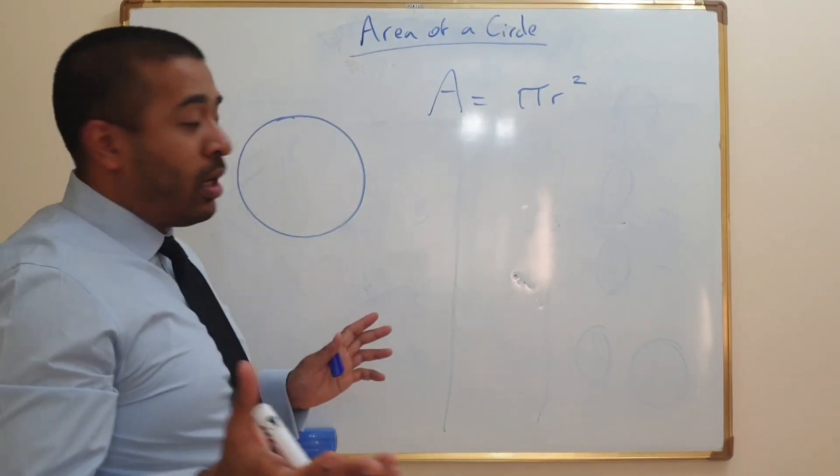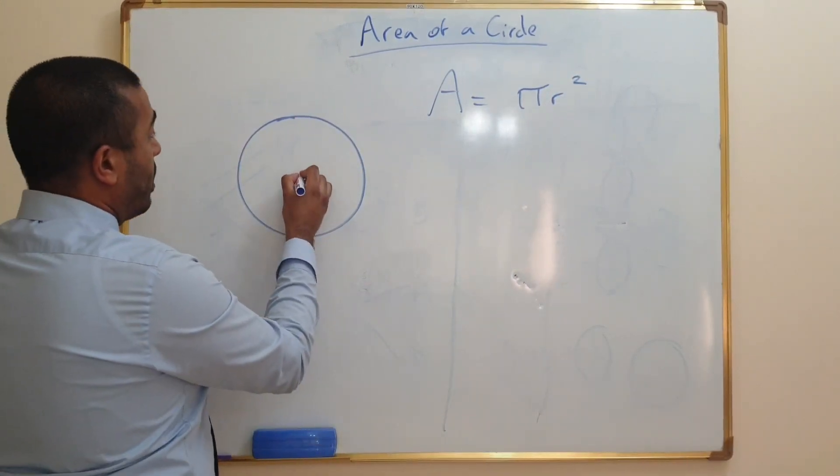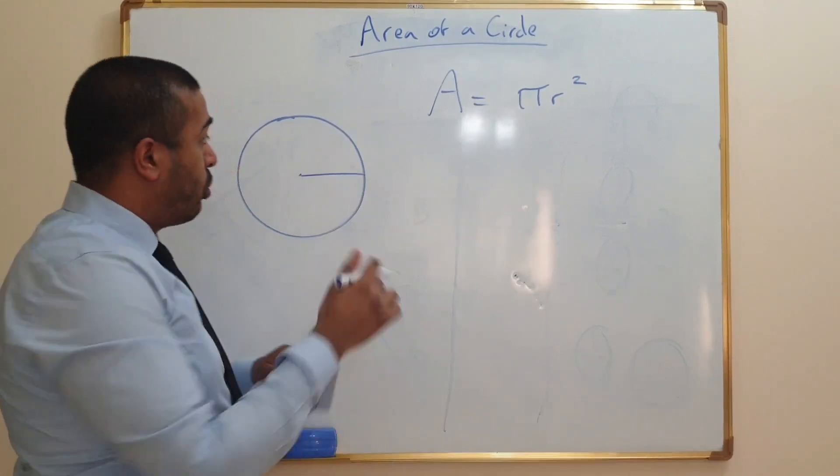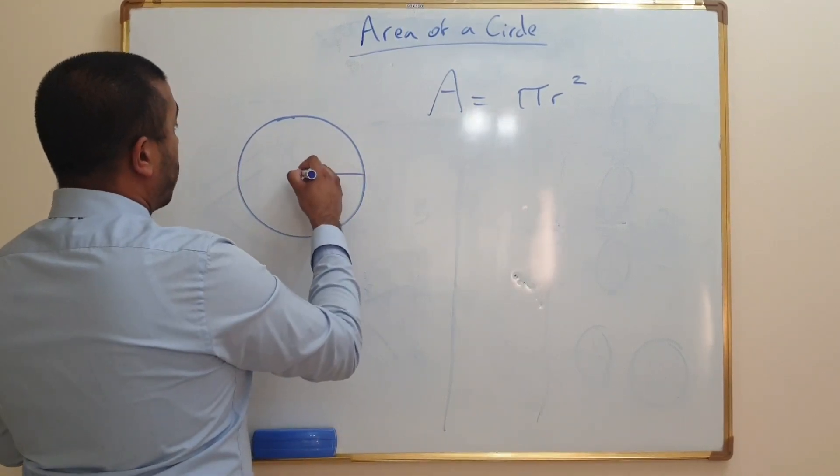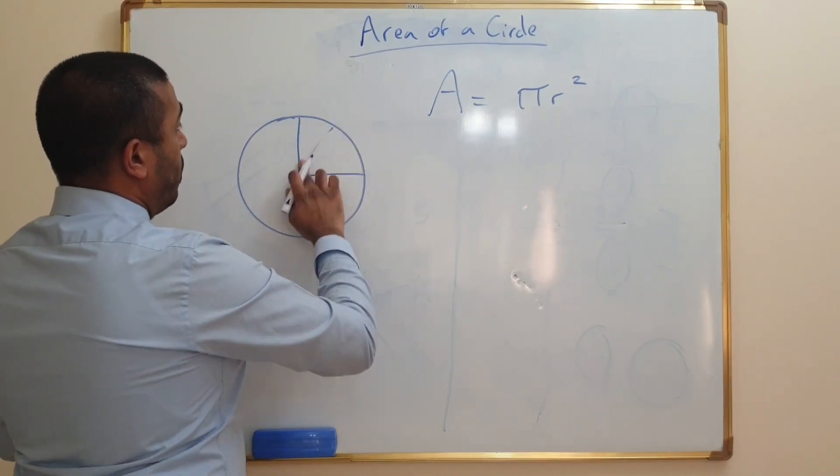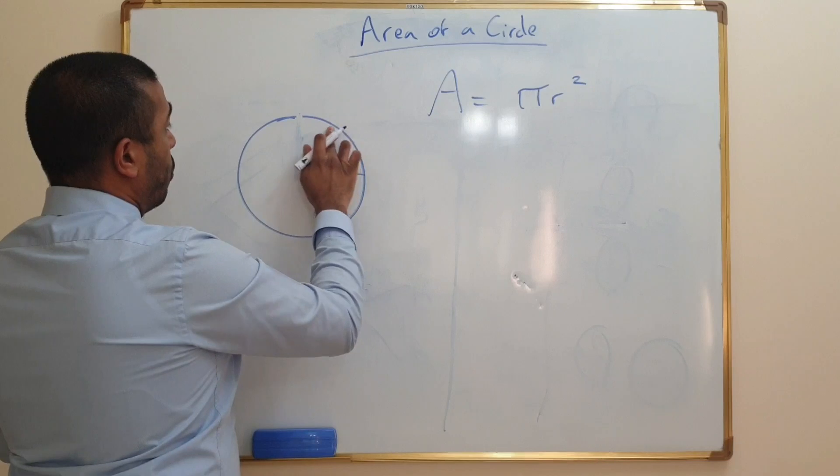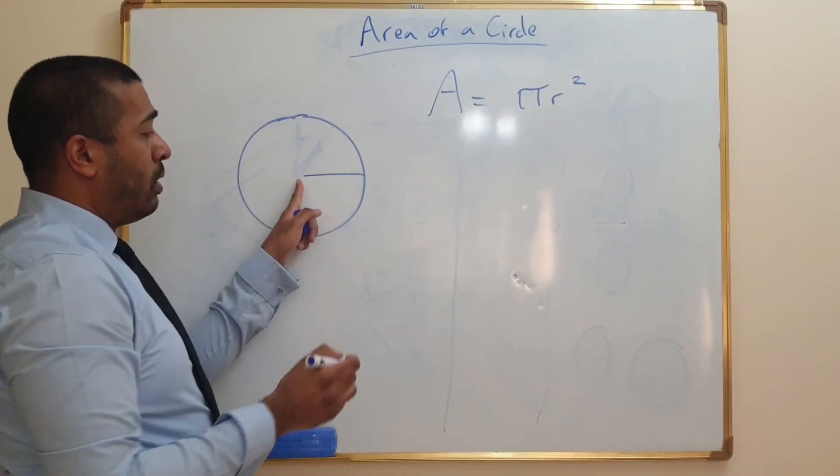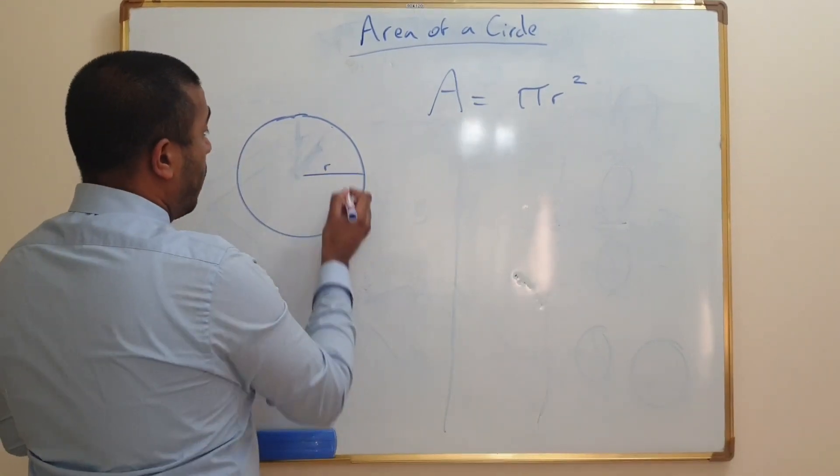Now what's the radius to start off with? Well, don't forget it goes from the center to the end. It could go this way, it could go that way, it could go straight up. It doesn't matter which way the line goes, so long as it starts in the middle and it reaches to the end. So that's the radius there.